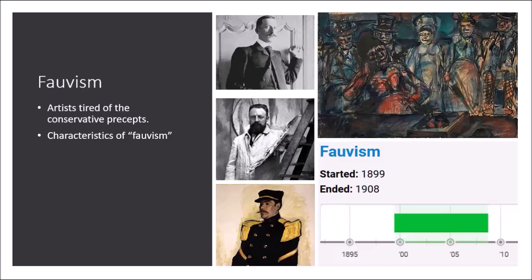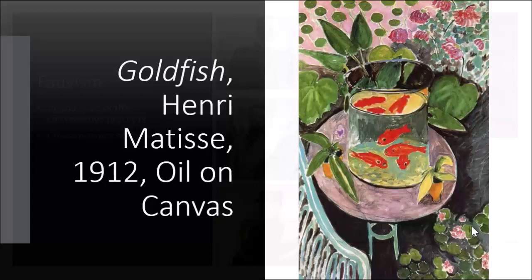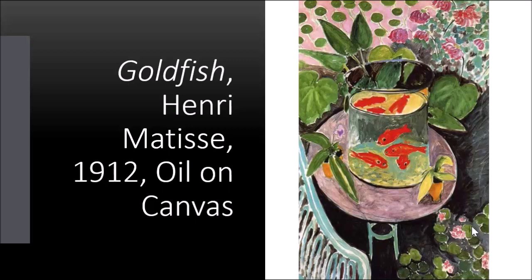This art period was short-lived. If you look at the timeline, it really went from 1899 to 1908 — your review book might say 1905 to 1908. Either way, this is a relatively short time period. One thing you need to understand about 20th century art is that there are many, many art movements. So let's take a look at one of the works of art in the 250.